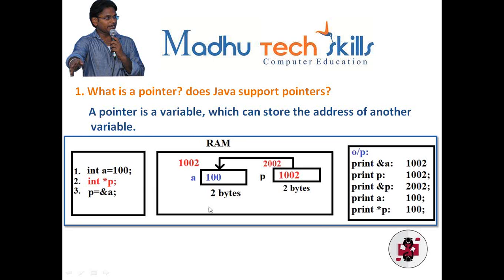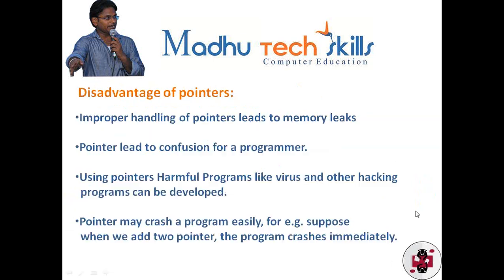Whenever I print `a`, the value of `a` will be printed — that is 100. Whenever I print `*p`, which means I'm trying to print the value stored at address 1002, since `p` is a pointer variable that contains an address and at that address we have a value, if you want to print that value use `*p`. If you print `*p`, the output will be 100.